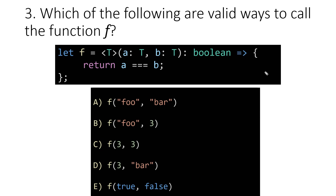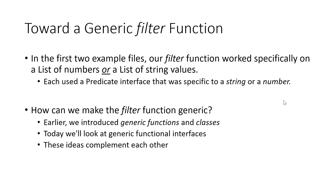Now that we've reviewed generic functions, we should ask ourselves if we can make a generic filter function. In the previous two examples today, the first filter function worked on a list of numbers and the second on a list of strings, each using their own specific predicate interface. This is again a problem of repetition, and it seems like generic functions can get us out of this bind.